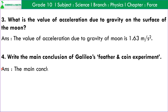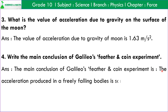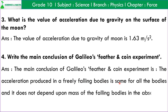Question number 4: Write the main conclusion of Galileo's feather and coin experiment. Answer: The main conclusion of Galileo's feather and coin experiment is the acceleration produced in freely falling bodies is the same for all bodies and it does not depend upon the mass of the falling bodies.